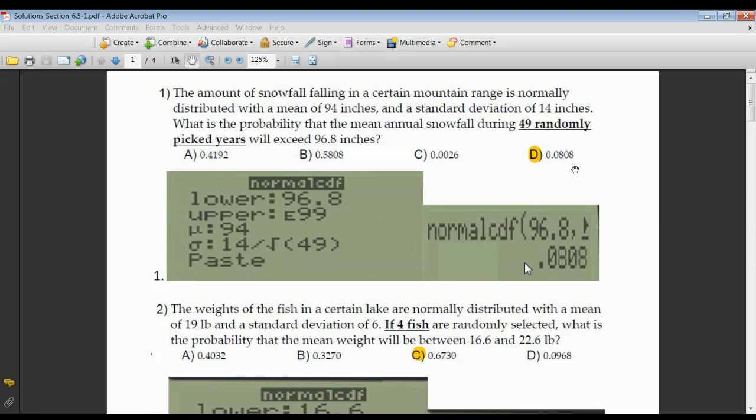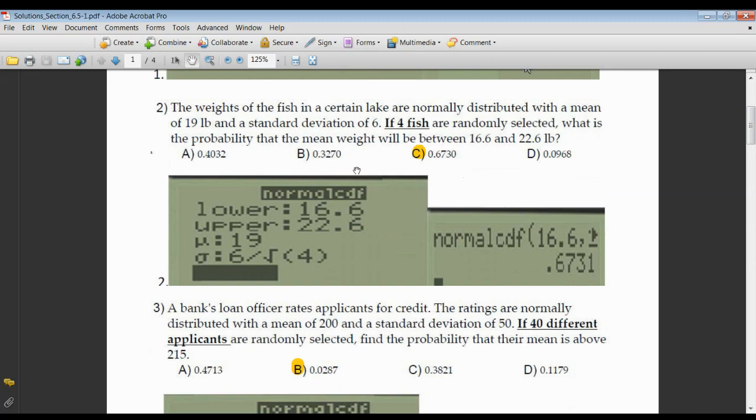Number two, weights of fish in a certain lake, mean of 19, standard deviation of 6. What's the probability that the mean weight of these four fish falls between 16.6 and 22.6? So 16.6 my lower, 22.6 my upper, mean given to me is 19.